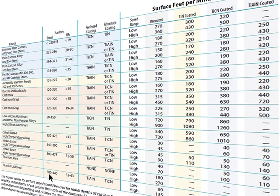Speed and feed charts and paper catalogs are safe but very conservative recommendations that do not take into consideration the specific machine tool, spindle, and tool holder being used. Rely only on these and you may be under-utilizing your machine's capabilities by a factor of two or more. Also note that most CAD-CAM systems use these charts for their speed and feed data.